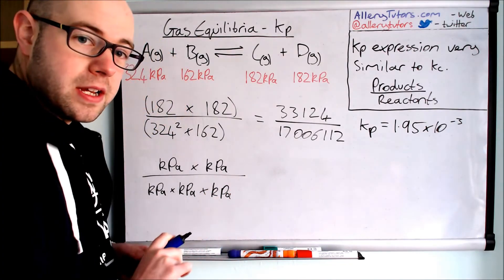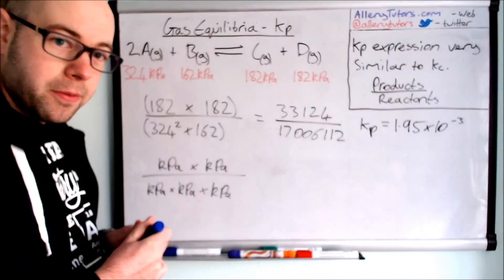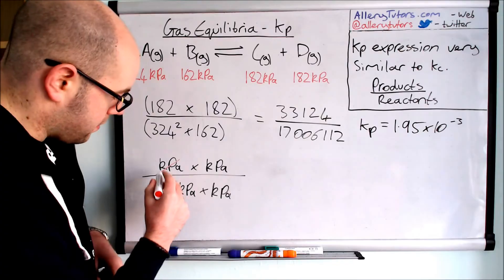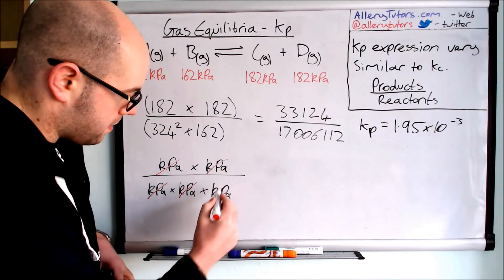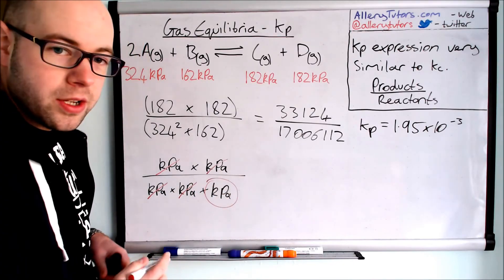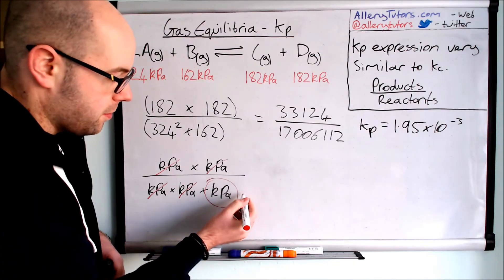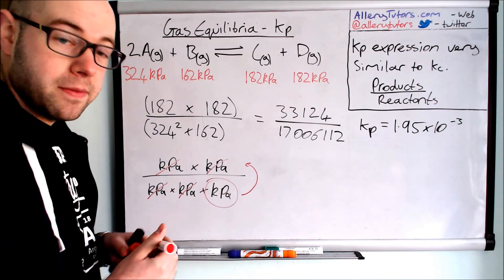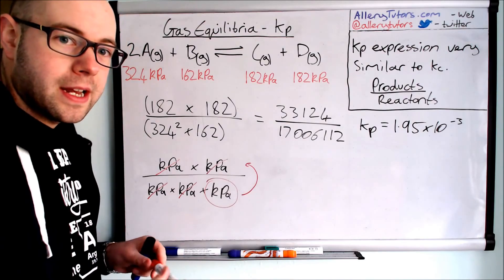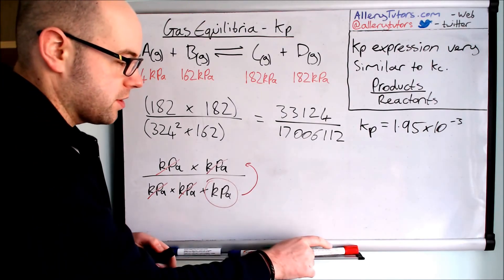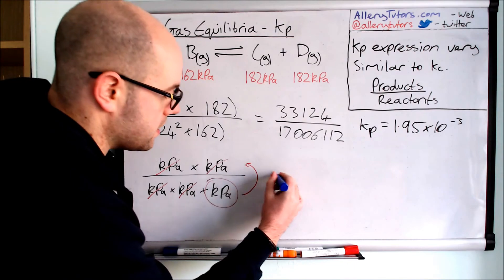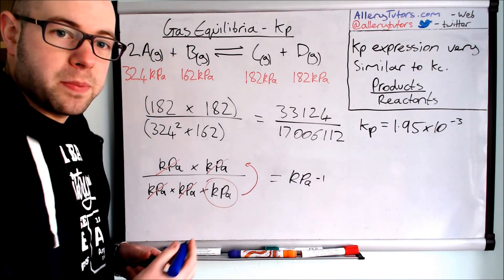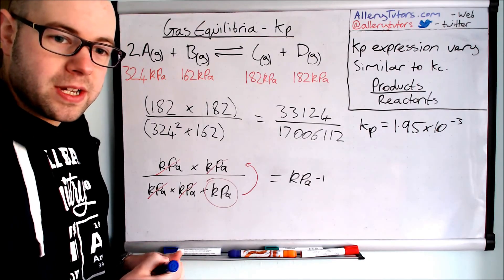And then all we have to do is then cancel out our units and work out what we've got left. So we're just going to cancel that one out and that one out and we're now left with just one unit left in the bottom line and what we have to do is drag that up onto the top line and when we do that we effectively just put a minus one next to it because we've inverted the units. So the units for this in this case will be KPa to the minus one and then you'd put that at the end of the number that you've just worked out there.